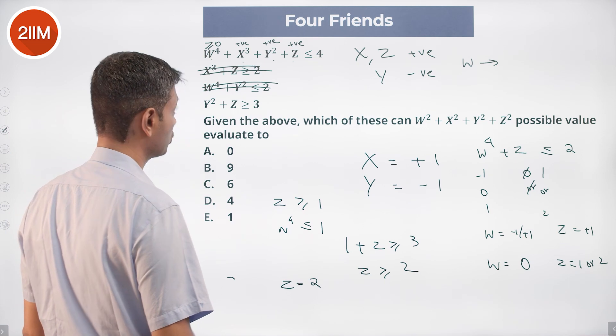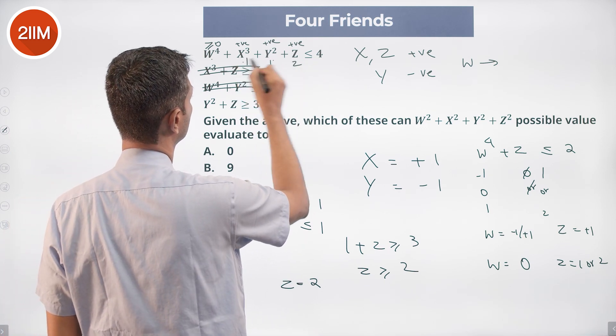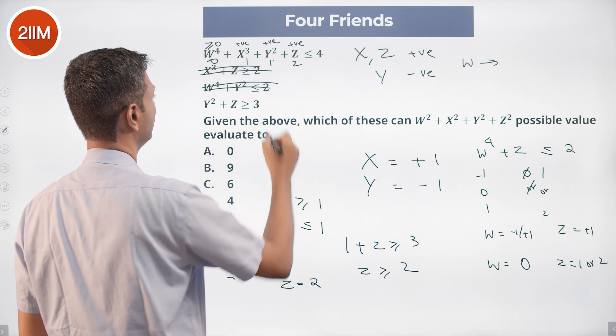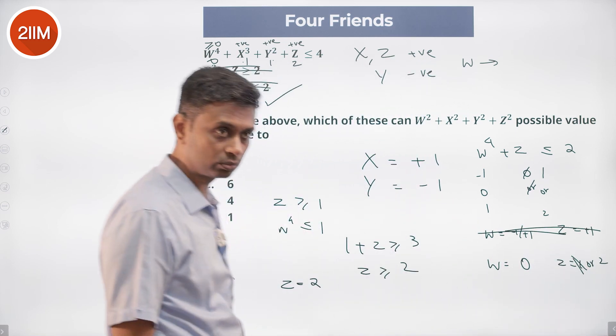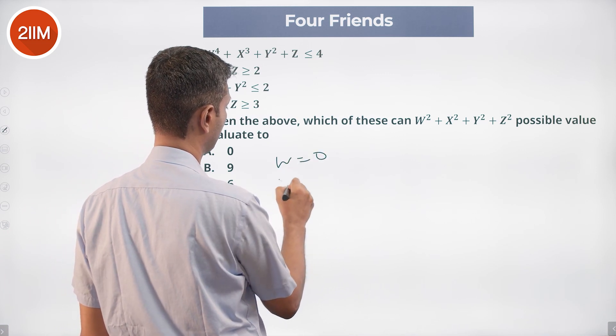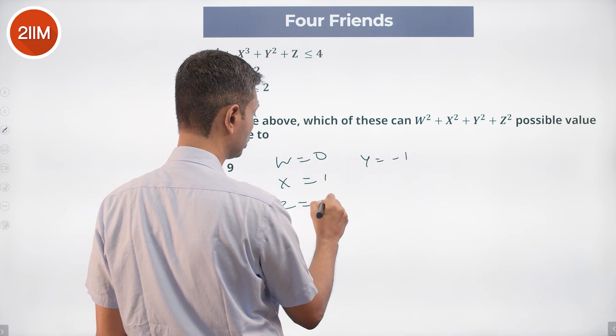Now when X is 1, Y is minus 1, Z is 2: this is 1, this is 1, this is 2. These add up to 4. W has to be 0. Wonderful. So including this, we can eliminate that also and say Z is 2. We know that W = 0, X = 1, Y = -1, Z = 2.